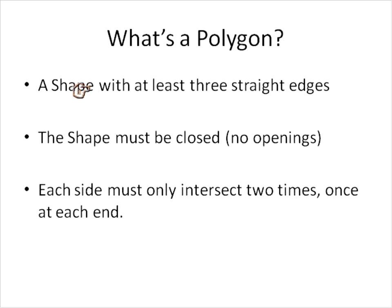What is a polygon? It's a shape with at least three straight edges. The shape must be closed. In other words, no openings. And each side must only intersect two times, once at each end. And we call those intersection points a vertex.